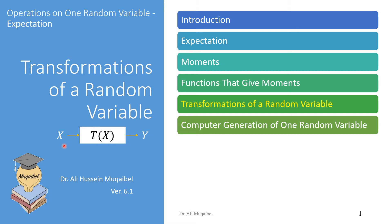By transformation of random variables, we mean we are given an input distribution x, we know its PDF, and it goes through a transformation or a system. We get the output y, which is another random variable. Given the input PDF, given the input distribution, what would be the output distribution? The process of finding the output distribution is known as transformation of random variables.